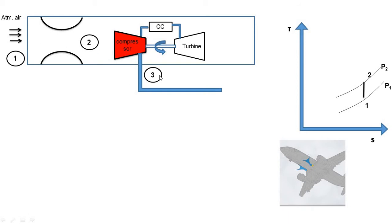We draw the 2 to 3 line on the TS diagram. Constant entropy means it is vertical, and since it is compression the line moves upward — temperature increases. Pressure increases from P2 to P3, temperature increases from T2 to T3, and S2 equals S3. When we take the projection on the x-axis, it is the same point, confirming S2 equals S3.